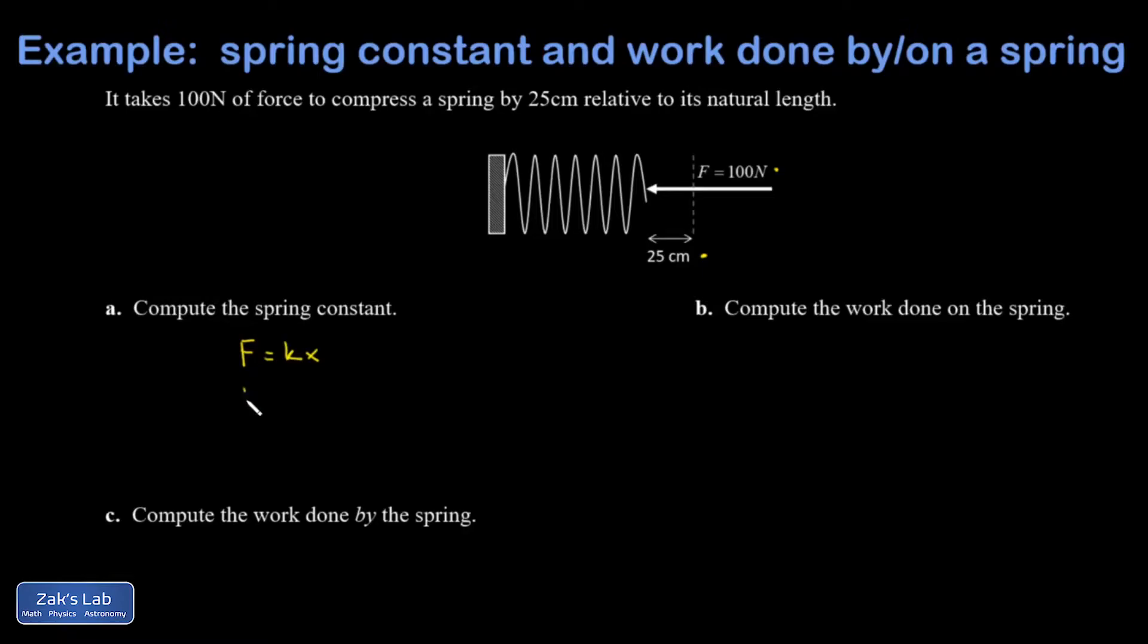It takes a 100 newton force to compress by 25 centimeters. I've got to put that in SI units—meters. So I get k equals 100 newtons over 0.25 meters. 0.25 is a fourth, so I can do this without a calculator. I get 400 newtons per meter for the spring constant.